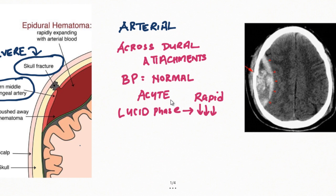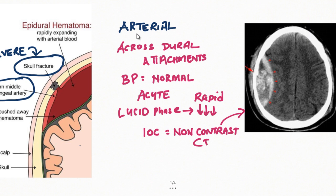The investigation of choice is non-contrast CT scan. The hemorrhage will be seen as a hyperdense area on the scan. The shape is characteristically biconvex — also known as lens-shaped.